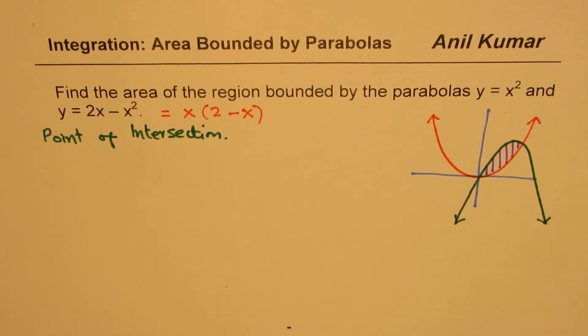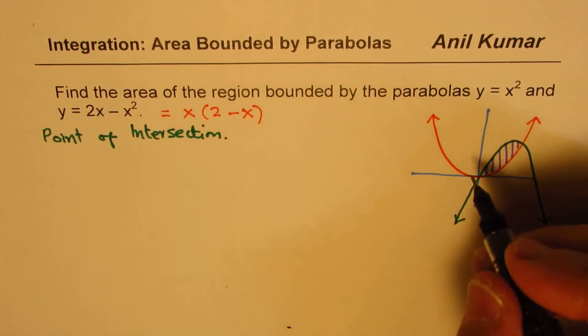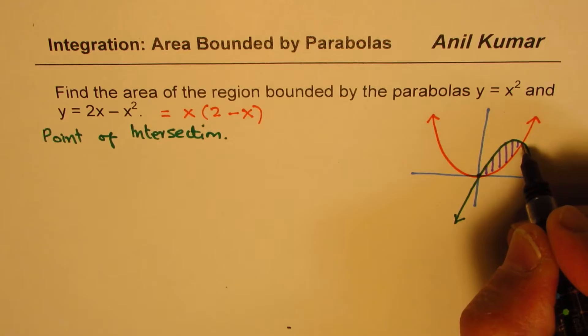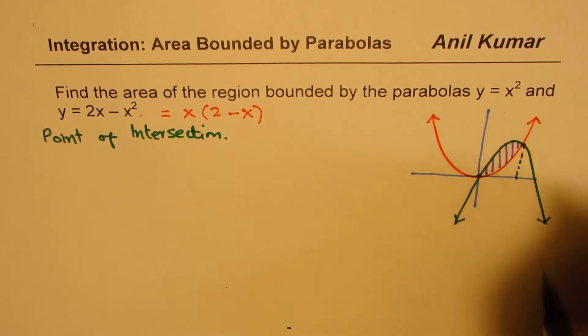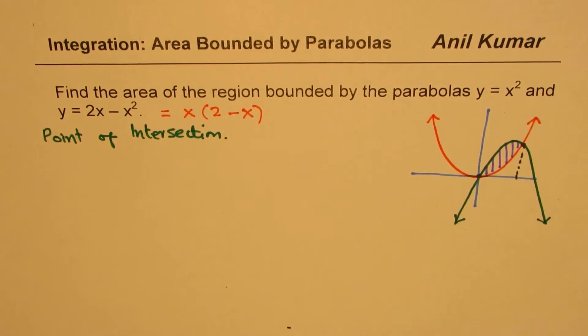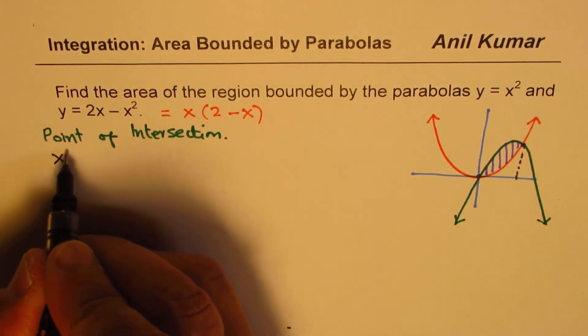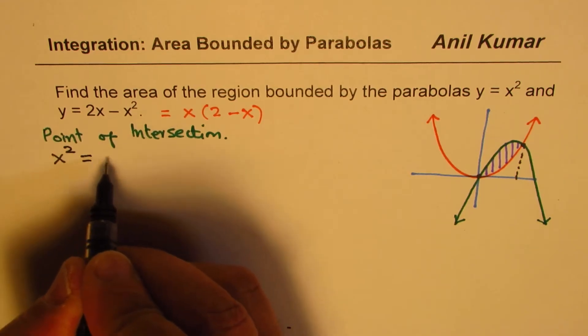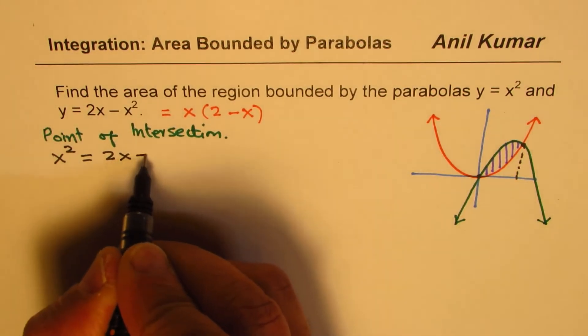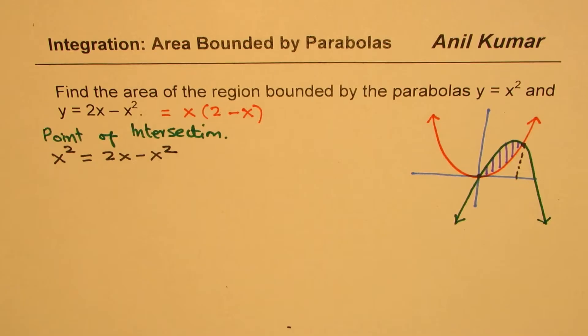So first step is to find the point of intersections, these two points. So those will give us the x values to work within. So the point of intersection we can get by equating the two equations. One is x squared, the other one is 2x minus x squared.